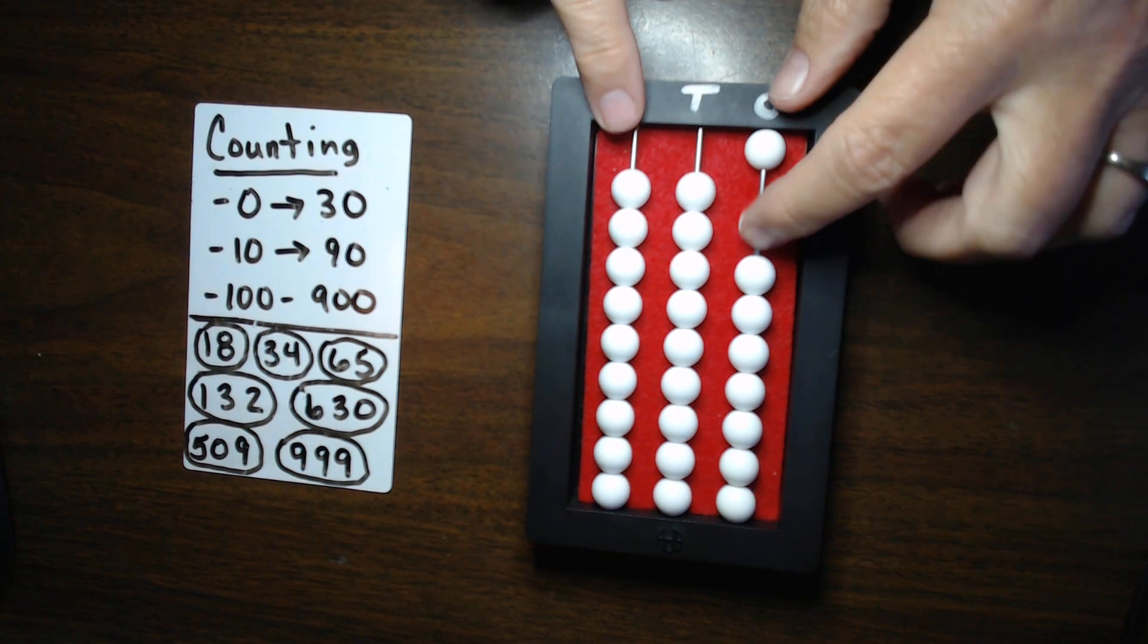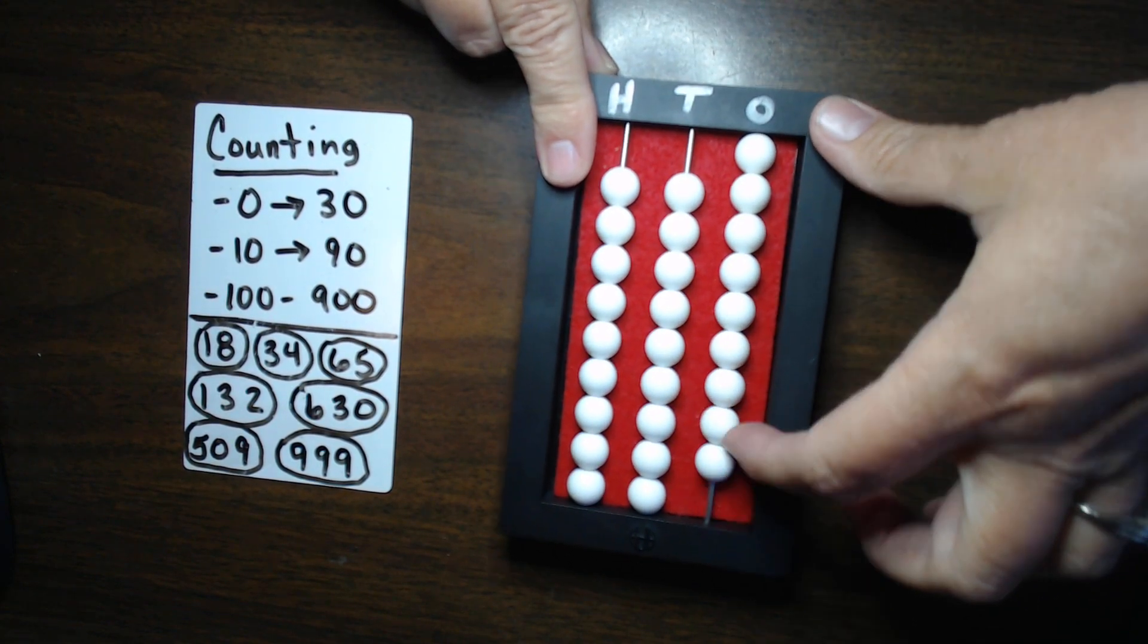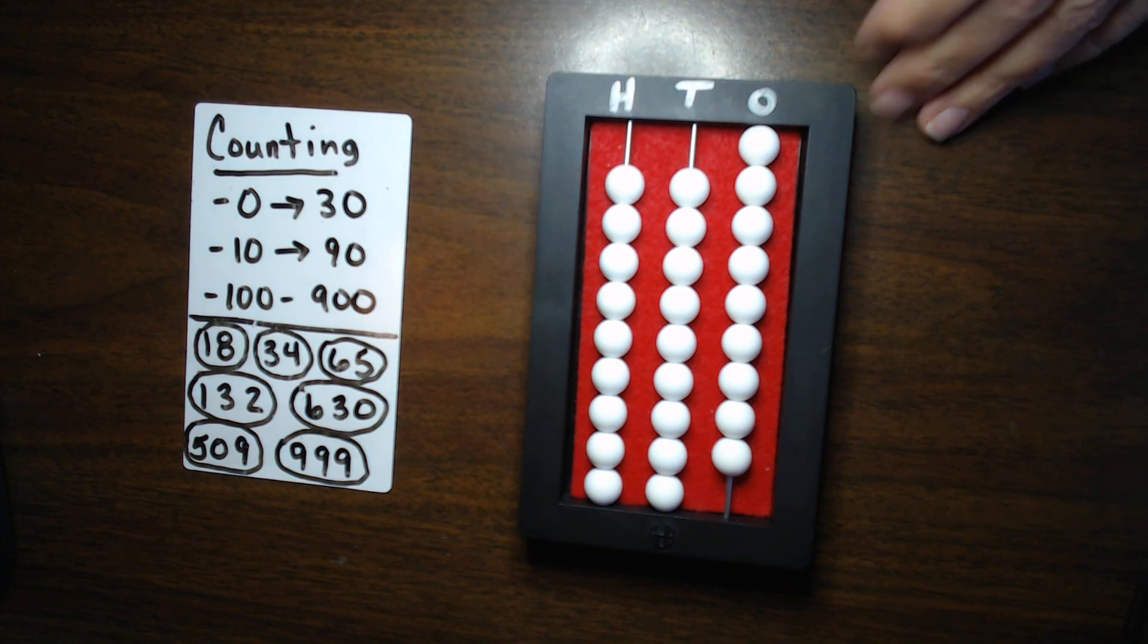So, if we wanted to set the numbers, we'll start with 1 and start counting. That is in the 1s column. So, there's 1, and 2, 3, 4, 5, 6, 7, 8, 9. So, now I have set the number 9 on the Abacus.